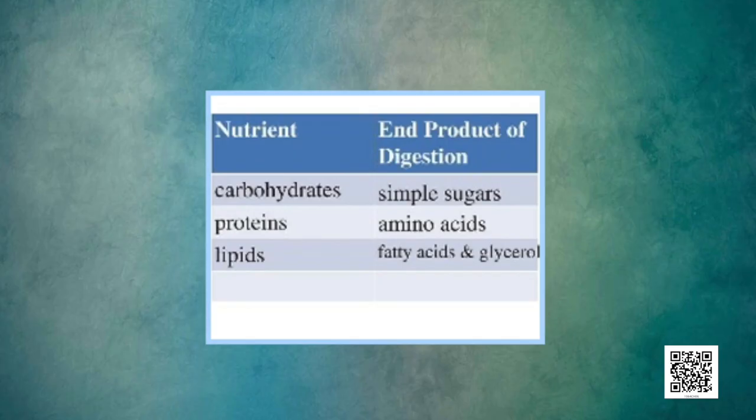In our previous session I told you about the end products of digestion. It's super important to keep in mind that the end product of carbohydrates is glucose, the digestion of proteins gives us amino acids, and fat digestion gives fatty acids and glycerol. Among all these end products, glucose is the quickest and best source of energy and hence it forms the base of respiration.